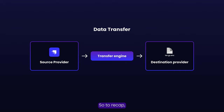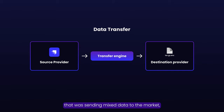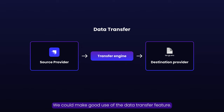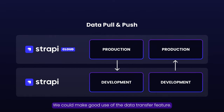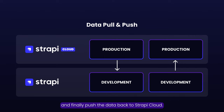On the first day in production, the bakers discovered a bug. The good news was that it only took a few minutes to fix — first we fixed the frontend that was sending mixed data to the backend, but then we also had to fix the corrupted data already in the database. For that, we could make good use of the data transfer feature: pull the data from the production environment in Strapi Cloud to a local development environment, run a script in the bootstrap function to fix the corrupted data, and finally push the data back to Strapi Cloud once everything checks out.